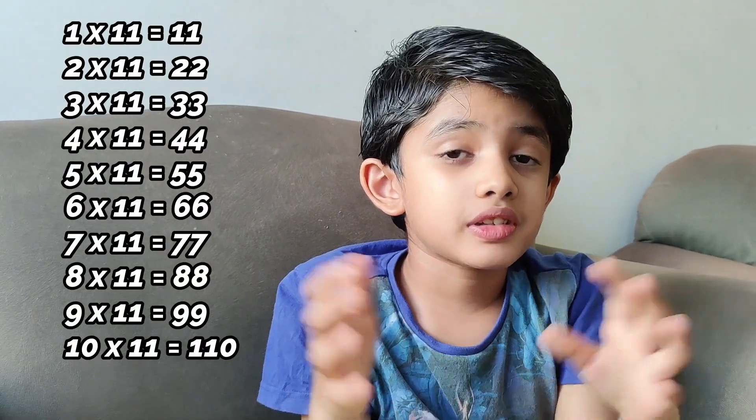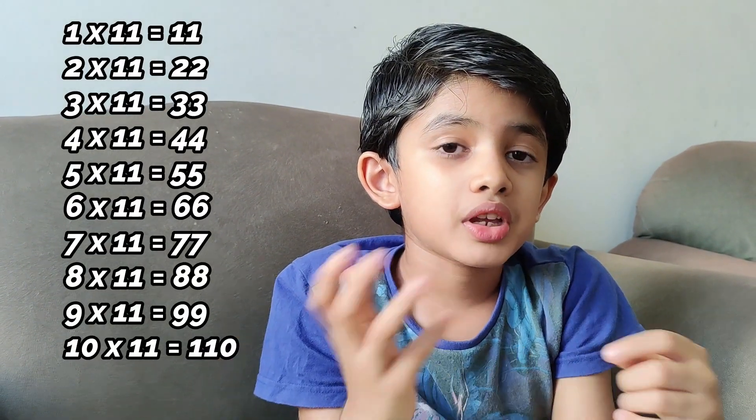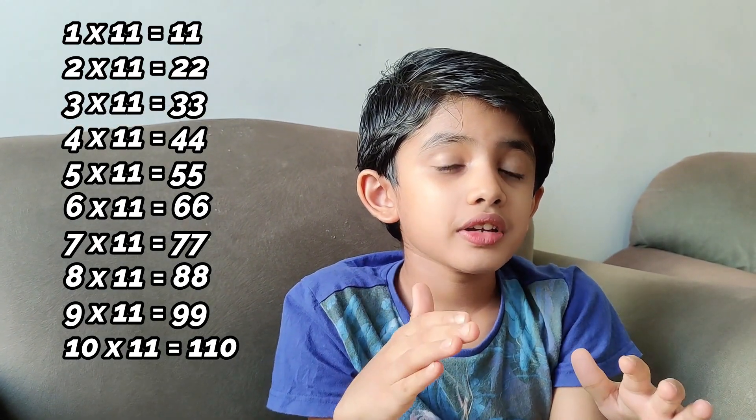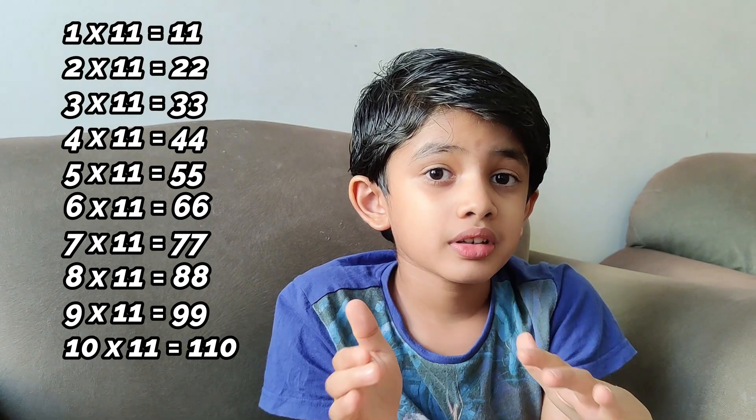Hope you know the multiplication table of 11. It's very easy. One times 11 is 11, two times 11 is 22, like that 33, 44, and at last 10 times 11 equals 110.